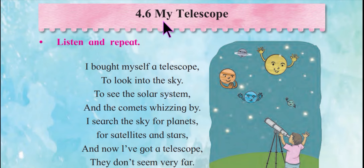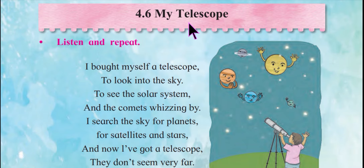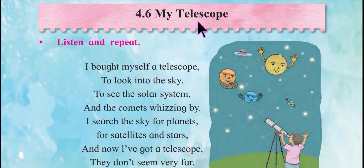Hello students, today we are going to learn the poem 'My Telescope' — it's 4.6, My Telescope, Standard 2 English, Bal Bharti. What do you mean by telescope? A telescope is an instrument in the shape of a tube with special pieces of glass — lenses inside it. You look through it to make things that are far away appear bigger.